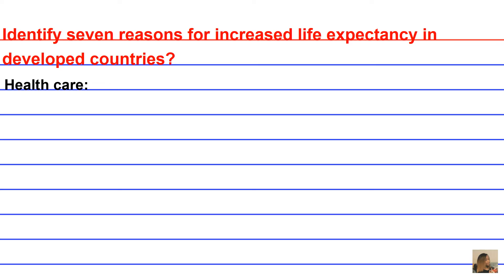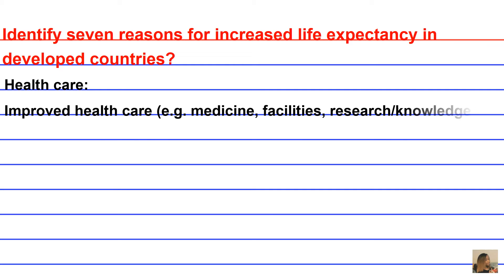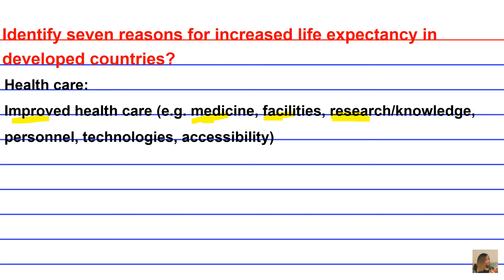The first reason would be in the area of healthcare. Improved healthcare, specifically in the areas of medicine, facilities, research, and knowledge about various diseases. The personnel, like doctors, the technologies like screening tools and therapeutic technology, and accessibility. There are very few underserved areas as it relates to primary healthcare, especially in the United States.